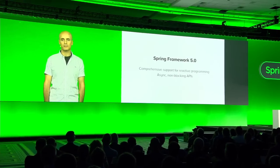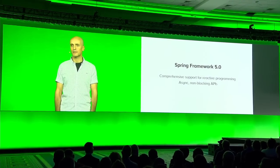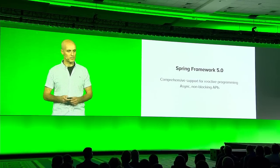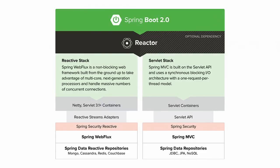Almost exactly one year ago, Spring Framework 5 delivered comprehensive support for reactive programming — building asynchronous non-blocking applications that scale and are resilient under load while using less resources. A few short days later, Spring Data K dropped support for reactive data repositories, and just ahead of Spring 1 in December, Spring Security provided reactive bits as well.